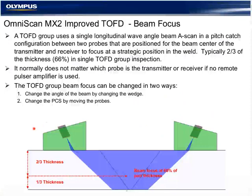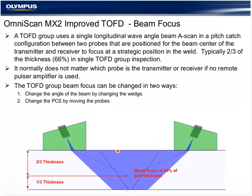The TOFD group is simply two identical conventional probes optimized for TOFD in a transmit-receive configuration. We would typically focus a single TOFD group at about two-thirds the thickness. That gives good coverage on the top and bottom, with the weak spot being directly in the center between the probes. It doesn't matter which probe transmits or receives — you'll get the exact same results.